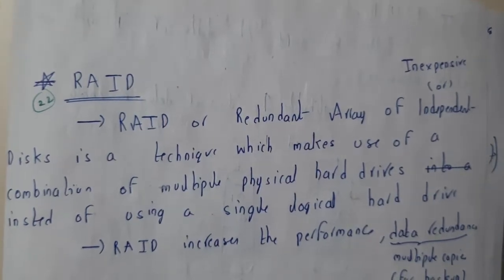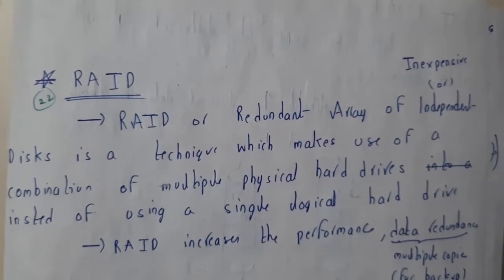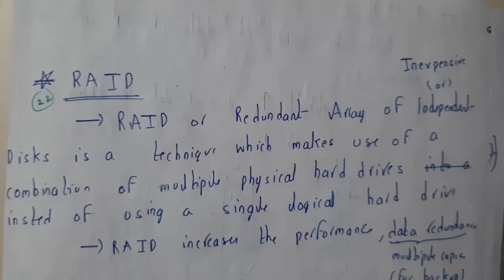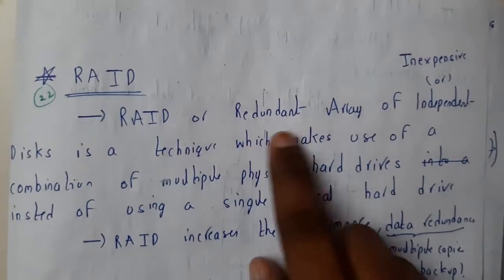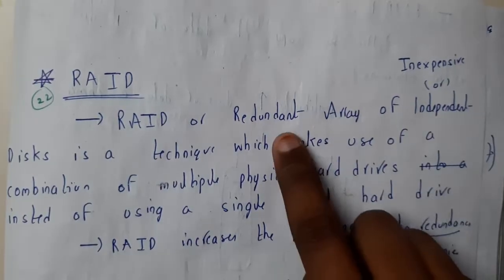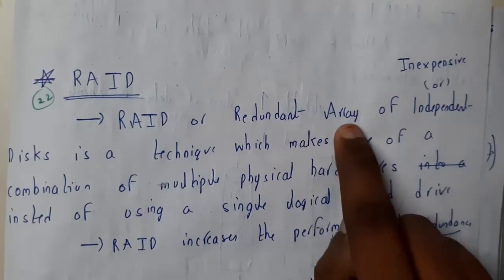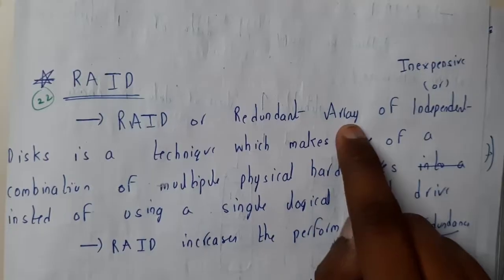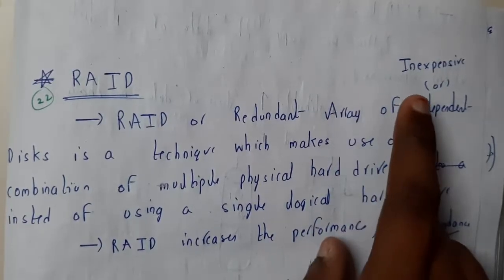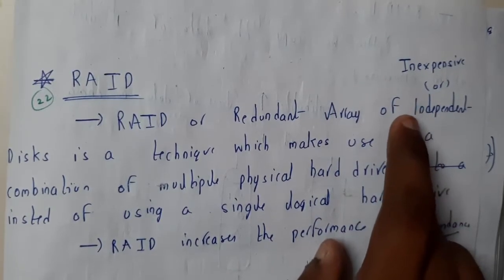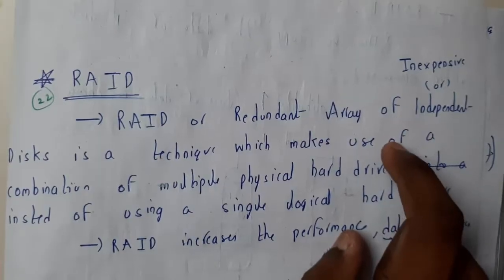Hello guys, we are back with our next tutorial. In this tutorial let us go through RAID. RAID is nothing but Redundant Array of Independent Disks — previously they used to call it Redundant Array of Inexpensive Disks.